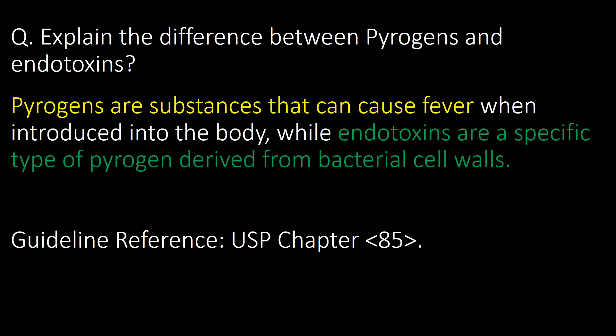Pyrogens and endotoxins — both terms are used in the pharma industry interchangeably, but they are different. Pyrogens are substances that can cause fever when introduced into the body, while endotoxins are specific types of pyrogens derived from bacterial cell walls. This means all endotoxins are pyrogens, but not all pyrogens are endotoxins. Reference guideline: USP chapter 85.